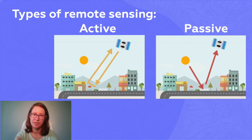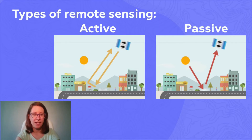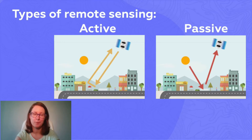Passive sensing is like a photo camera or our own eyes. It detects radiation that is emitted by the sun and reflected from the Earth's surface.